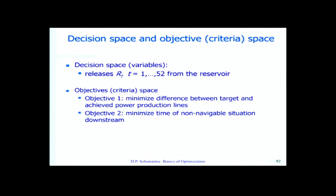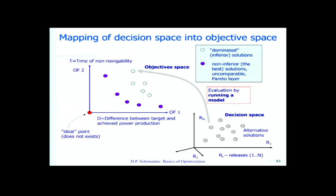One objective was to ensure navigability, and the second was to maximize hydropower production. Avila Torres built a Mike-11 model of this river, and on top of it he built 25 hydrological models for catchments surrounding and discharging into the river. We posed a multi-objective problem: the first objective was to minimize the difference between target and achieved power production lines, since the grid cannot handle more power than it can handle. The second objective was to minimize the time of non-navigable situation downstream — the target was navigability for at least seven months per year.